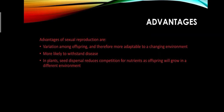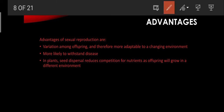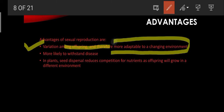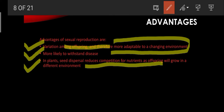The advantages of sexual reproduction include: variation among offspring, making them more adaptable to a changing environment. Because genetically different organisms are produced, they are more likely to withstand diseases. In plants, seed dispersal reduces competition for nutrients, as offspring grow in different environments.